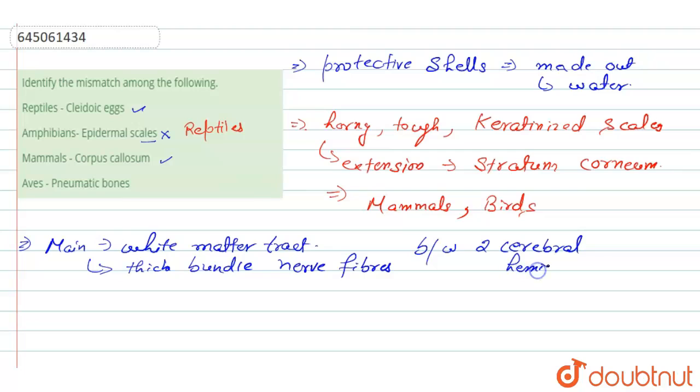Next is the aves having the pneumatic bones. So this one is also correct because we know that pneumatic bones are also called hollow bones.